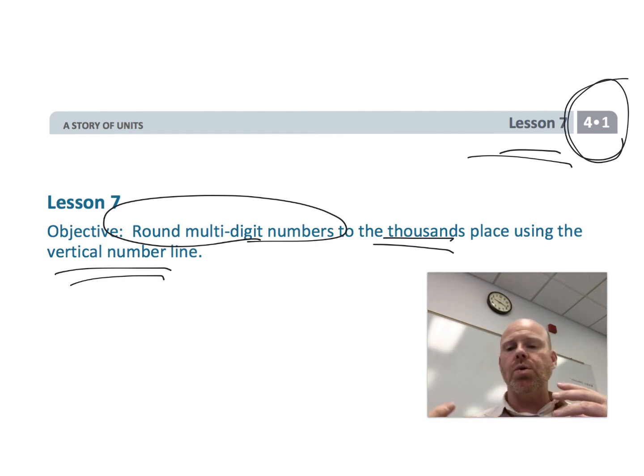to understand number sense and why things are working the way they are, rather than just giving them a simple rule like five and higher, climb like fire, four and below, down you go. A great rule and a great mnemonic, and it'll work every single time, but it might not help students understand the mathematics of what's going on, the number sense that is necessary. So let's do some practice.